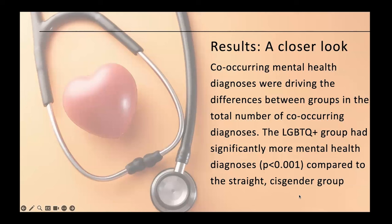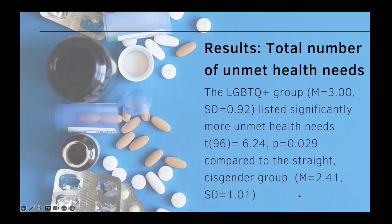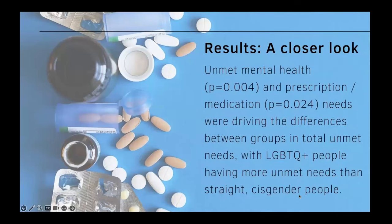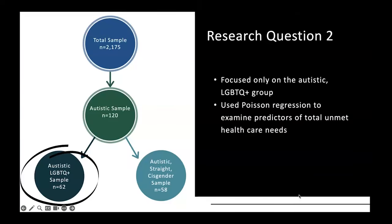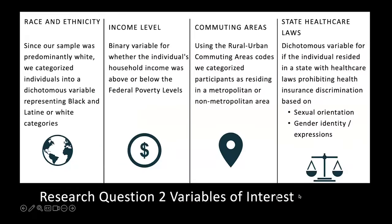They also reported having more total unmet healthcare needs overall. Looking more closely, this was really driven by not being able to get access to prescription medicines, unmet healthcare needs, and unmet mental health care needs. The second question looked at the LGBTQ group specifically, examining predictors of unmet healthcare needs — including race/ethnicity, income level, rural versus urban area, and state healthcare laws that specifically prohibited discrimination based on sexual orientation or gender identity or expression.